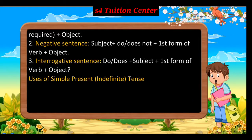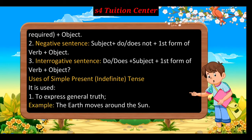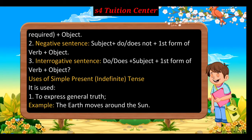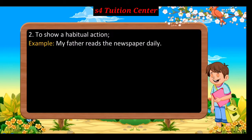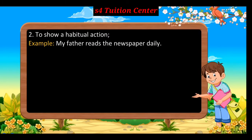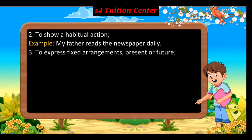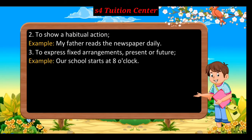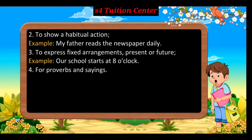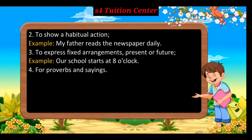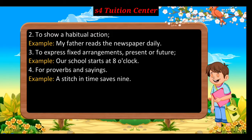Uses of Simple Present Indefinite Tense: It is used — first, to express general truth, e.g., the earth moves around the sun; second, to show a habitual action, e.g., my father reads the newspaper daily; third, to express fixed arrangements (present or future), e.g., our school starts at eight o'clock.